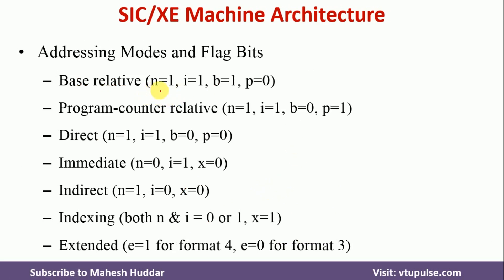Let us assume that N equals 1, I equals 1, B equals 1, and P equals 0. The value of X may be 0 or 1 — anything is possible. In this case, it is called base relative addressing mode because P is set to 0, so there is no program counter involved. B equals 1 means base relative. Because I and N are both set to 1, it is neither immediate nor indirect. If X equals 1, it becomes base relative indexed addressing mode.